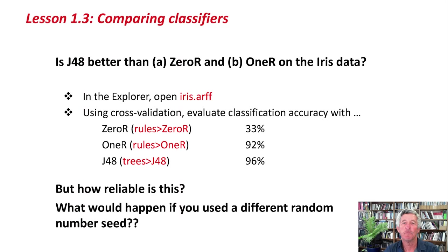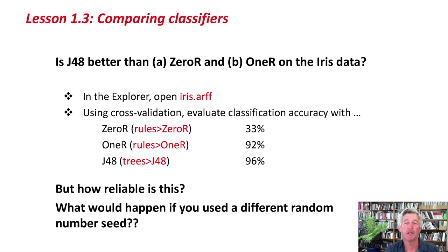Here's a question: is J48 better than 0R and 1R on the IRIS dataset? We could fire up the Explorer — you know how to do this — open the dataset, get the results for these three different machine learning methods, and see that J48, with 96% cross-validation accuracy, is better than 1R, which is better than 0R. But the question is, how reliable is this comparison? Things could change if we happen to choose a different random number seed, so the Experimenter helps produce more reliable comparisons between datasets and classification algorithms.